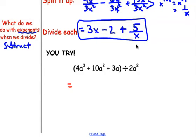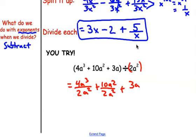When you divide by 2a squared, make each term a separate fraction. We have 4a to the third divided by 2a squared, plus 10a squared over 2a squared, plus 3a over 2a squared. Then we're just going to simplify these fractions.